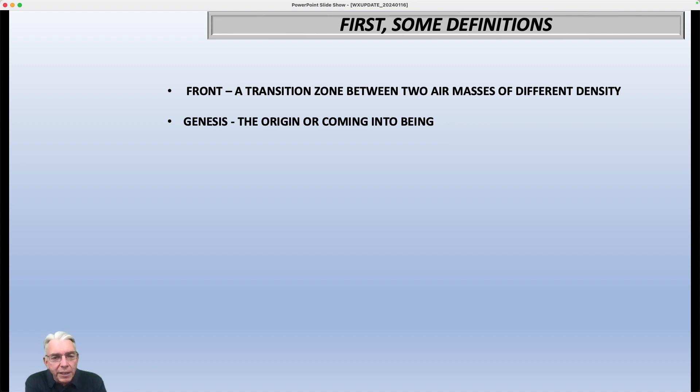And then, of course, the word Genesis means the origin of or coming into being. And so if you think about the book of Genesis in the Bible, the beginning. So if you combine these two words, then you have the word frontogenesis, which is the beginning or the intensification of a front. So let's suppose you have a situation where there's really not that much temperature contrast over a given region.